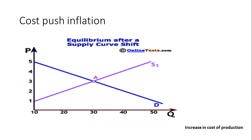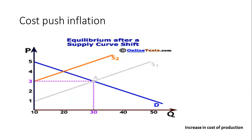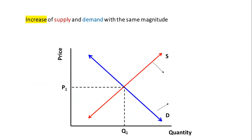Another reason for increasing prices is cost-push inflation. As we mentioned, supply shocks cause supply to decrease. When supply decreases, the price level increases and the number of units decreases. This is what we call a supply shock — prices increase and the quantity of units decreases.